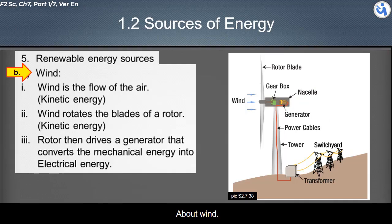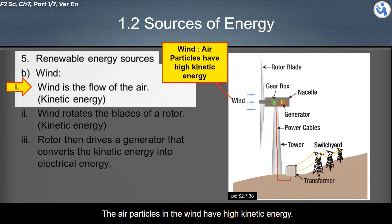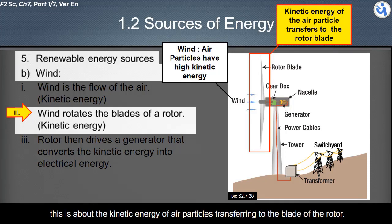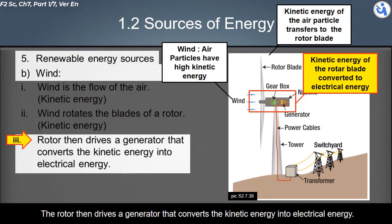Wind is the flow of air. Air particles in the wind have high kinetic energy. When wind flows through the blades of a rotor, the wind rotates the blades — kinetic energy of air particles is transferred to the rotor blades. The rotor then drives a generator that converts the kinetic energy into electrical energy.